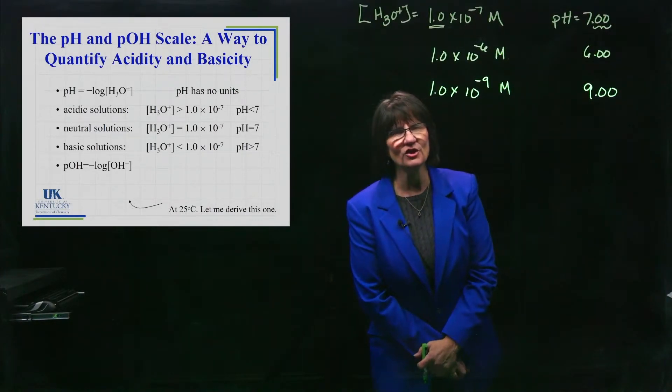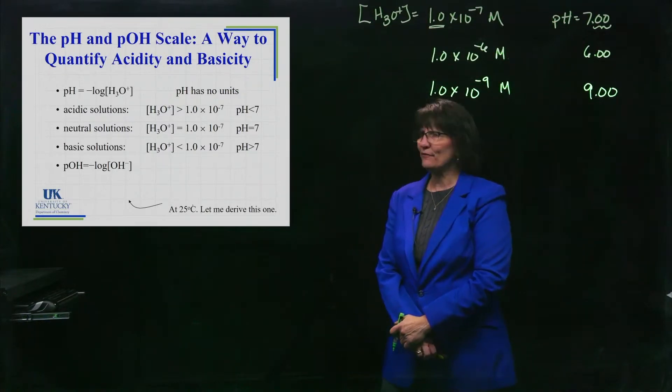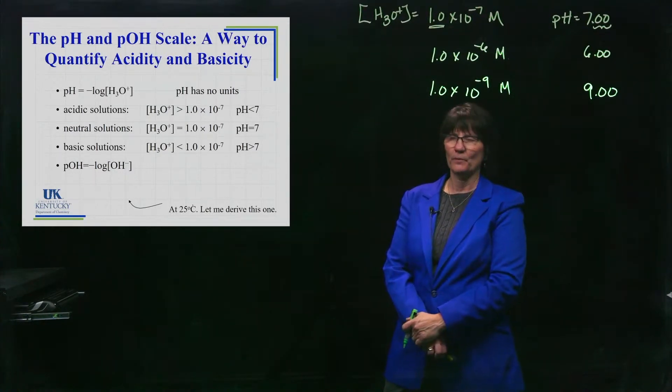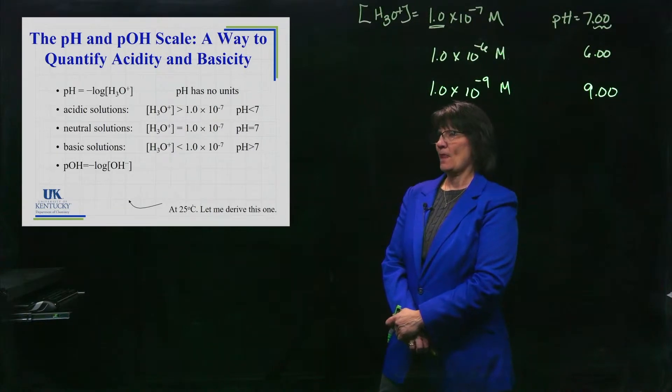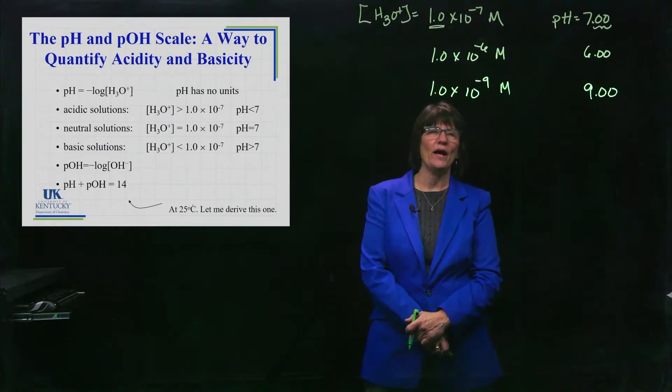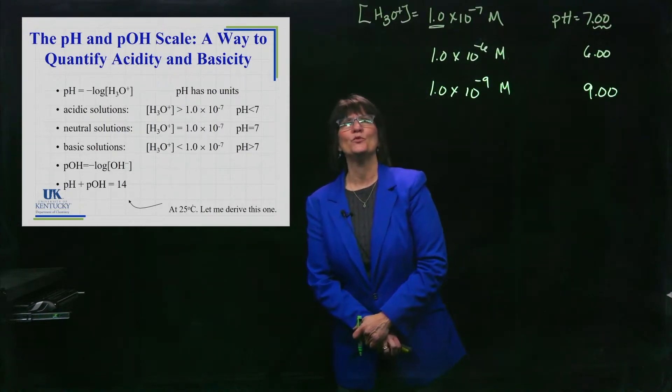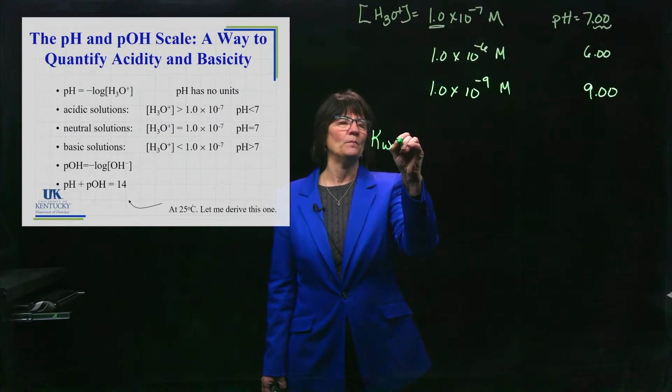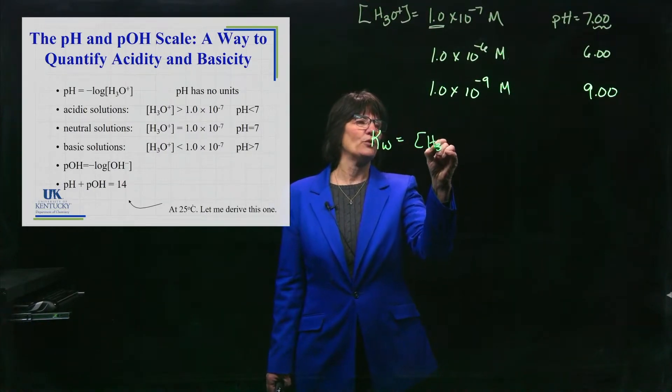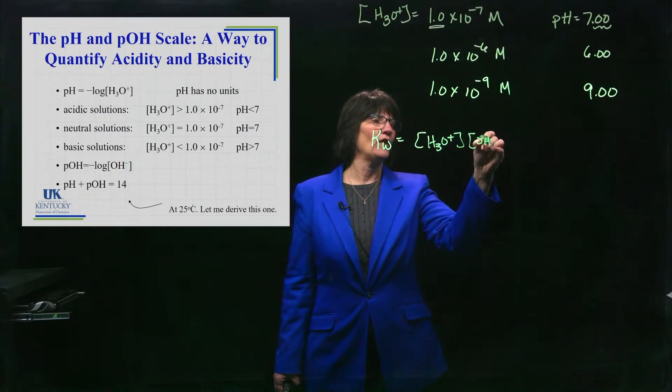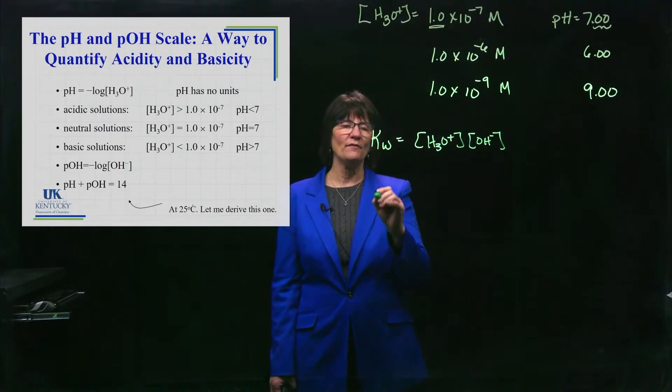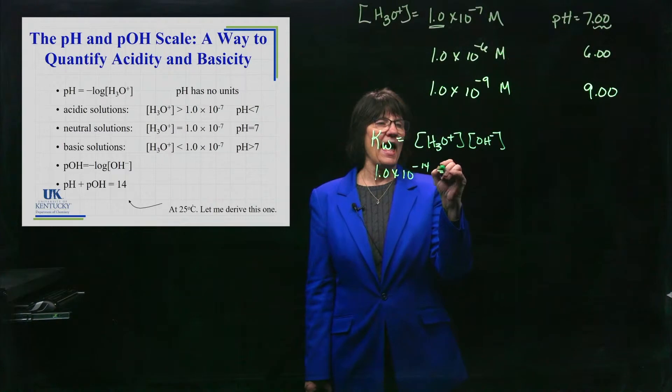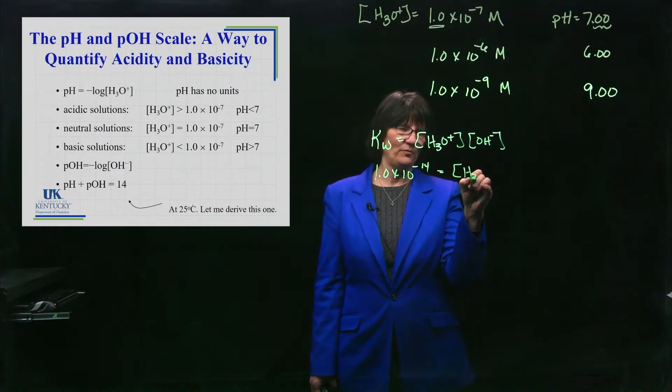That P function just means take the negative log of what comes after it. So, you're going to do POH. You're going to take the negative log of the OH minus concentration. So, you're going to see POH values, and the pH plus the POH is equal to 14. Let me show you where that comes from. We know that KW equals H3O+ times OH minus. If we're at 25 degrees Celsius, we know that this value is 10 to the minus 14.